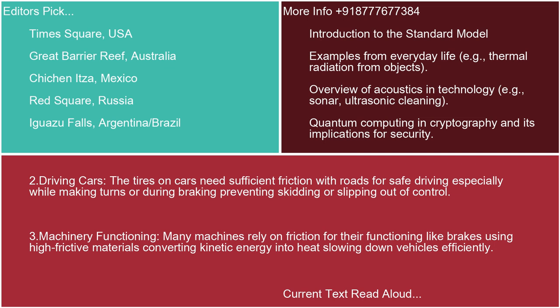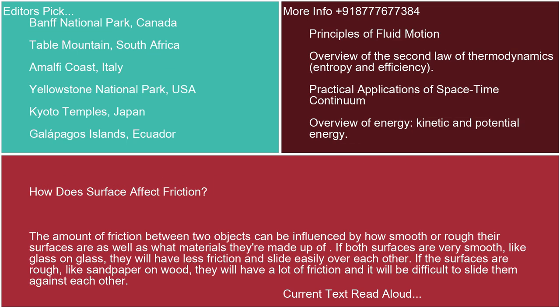Three: machinery functioning. Many machines rely on friction for their functioning, like brakes using high-frictive materials converting kinetic energy into heat, slowing down vehicles efficiently. How does surface affect friction? The amount of friction between two objects can be influenced by how smooth or rough their surfaces are, as well as what materials they're made of. If both surfaces are very smooth, like glass on glass, they will have less friction and slide easily over each other. If the surfaces are rough, like sandpaper on wood, they will have a lot of friction and it will be difficult to slide them against each other.